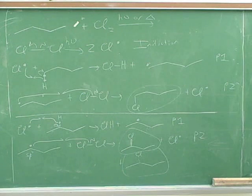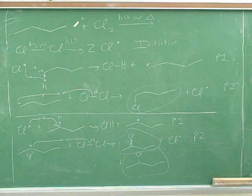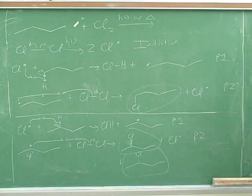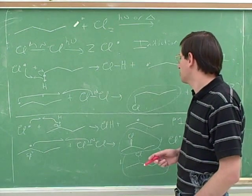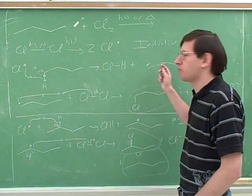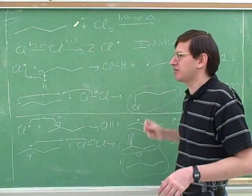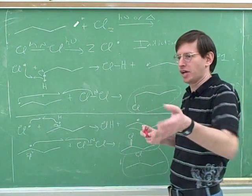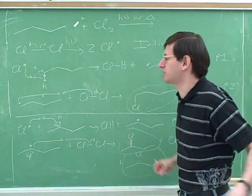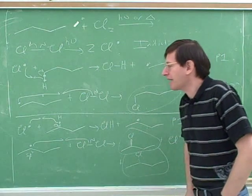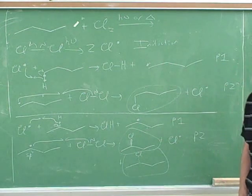A student asks: is it more likely that chlorine would take the hydrogen from the carbon with more hydrogens? The instructor responds enthusiastically, saying the student is thinking like an organic chemist. That's the exact question an organic chemist would ask. The regiochemistry question is: there's more than one hydrogen we can take, but an organic chemist wouldn't be satisfied with that — they would ask which one does it prefer to take. The mechanism should explain that.